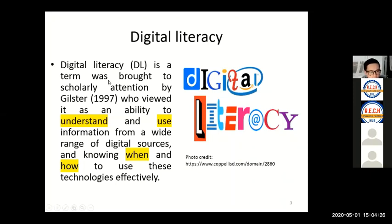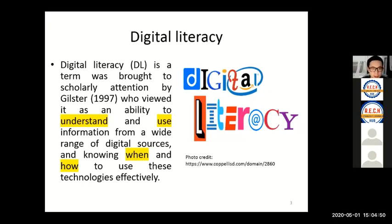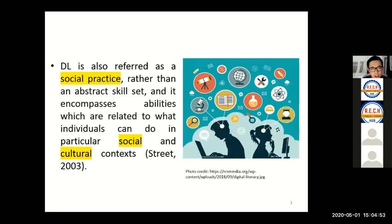Digital literacy is a term brought to scholarly attention by Gilster. He refers to digital literacy as an ability to understand and use information from a wide range of resources — basically, how to use and when to use technologies effectively. Gradually, digital literacy was also considered a social practice because people interact with each other, especially those with different social and cultural backgrounds.